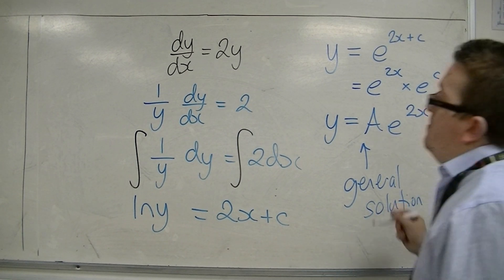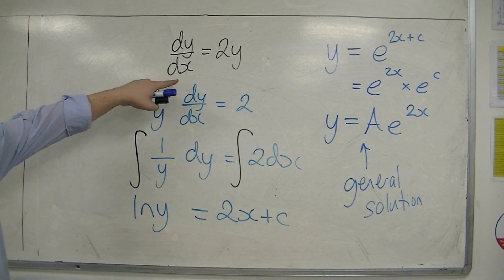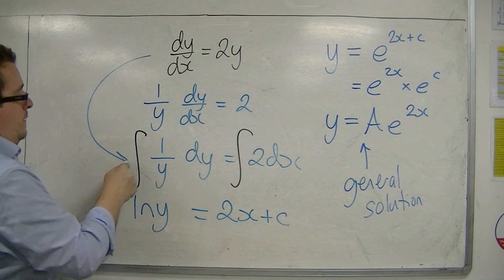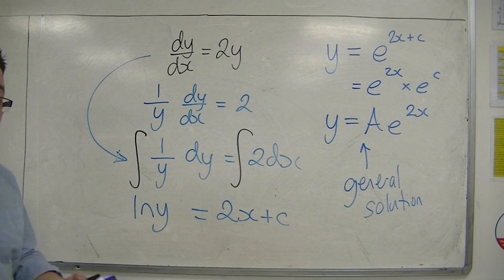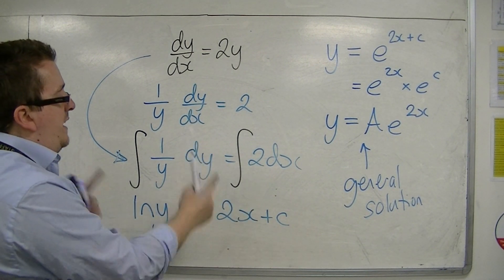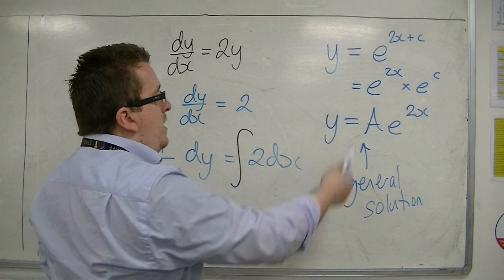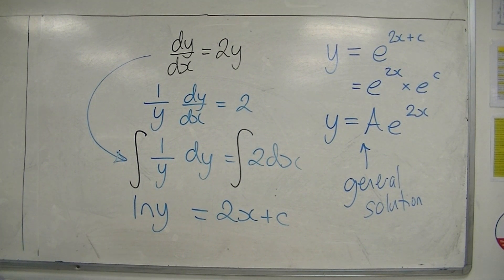So this is the method of separating variables. And it first entailed us going through this two-step process. So that we moved all the y's over to the left-hand side, all the x's over to the right, and integrated both sides. Then it's a case of rearrangement and simplification to get to the general solution that I want.